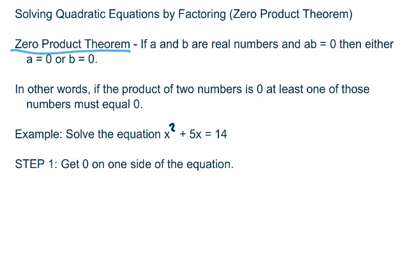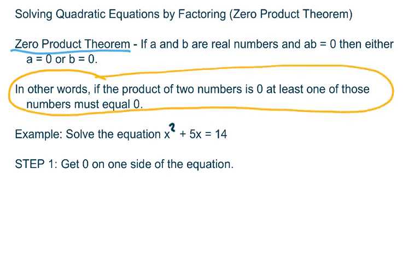It says simply this: if a and b are real numbers and a times b equals zero, then either a equals zero or b equals zero. Saying that in words in a way that probably will make more sense, we simply say this: if the product of two numbers is zero, at least one of those numbers must equal zero.